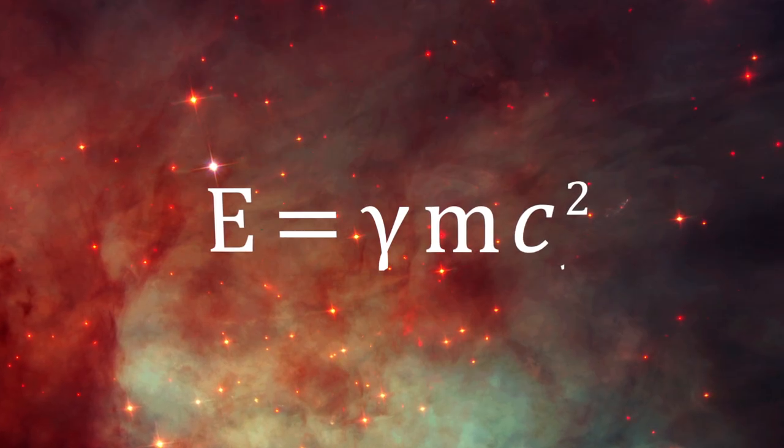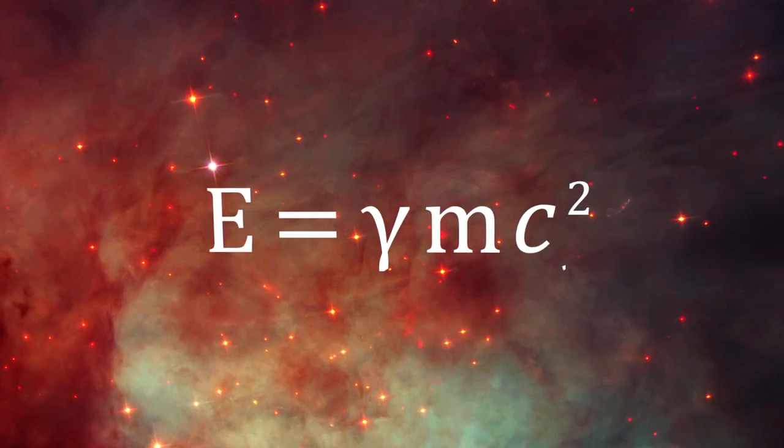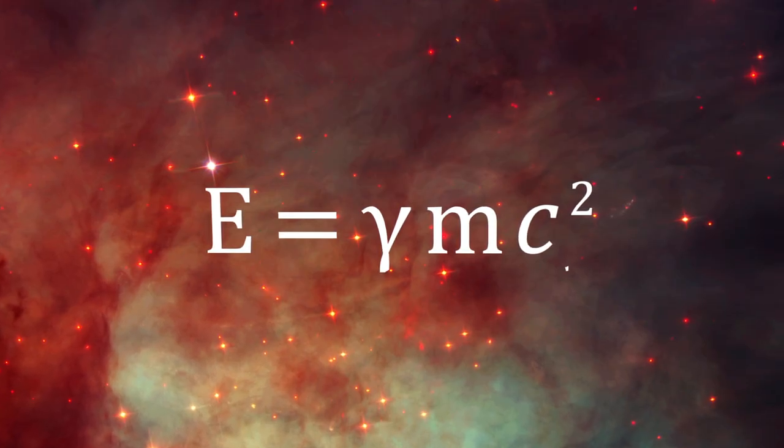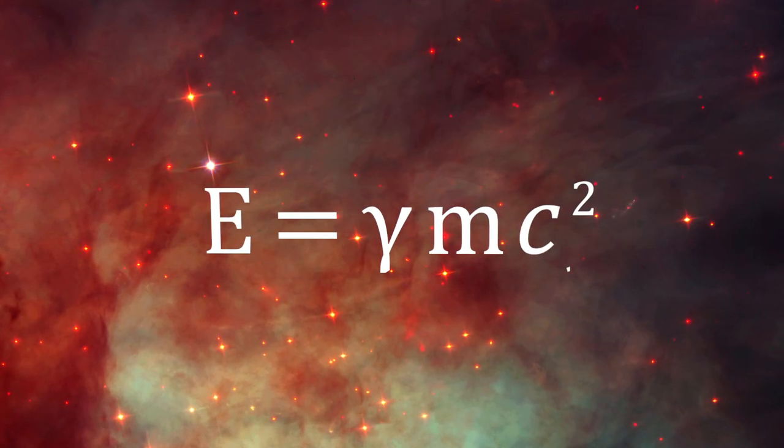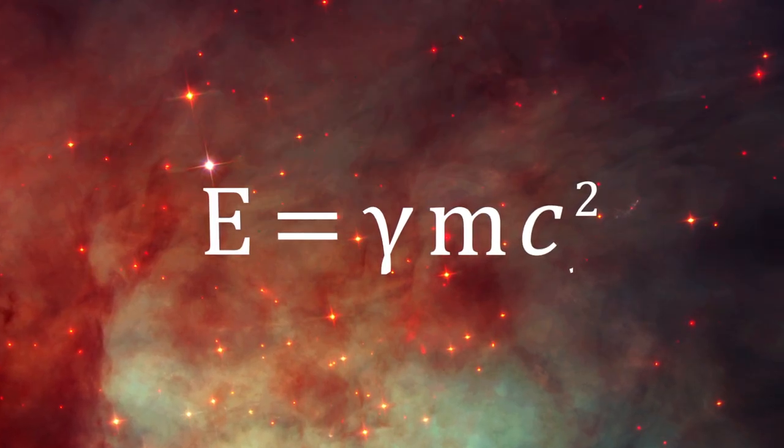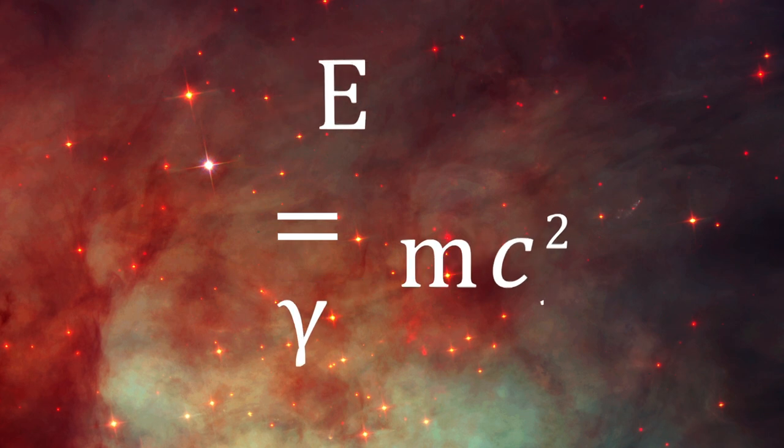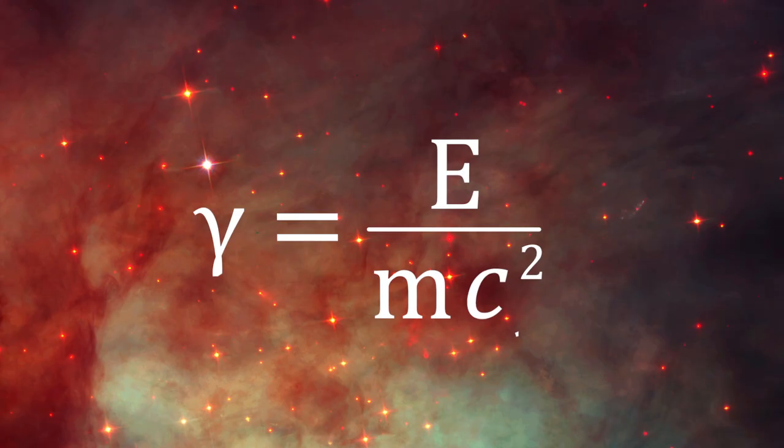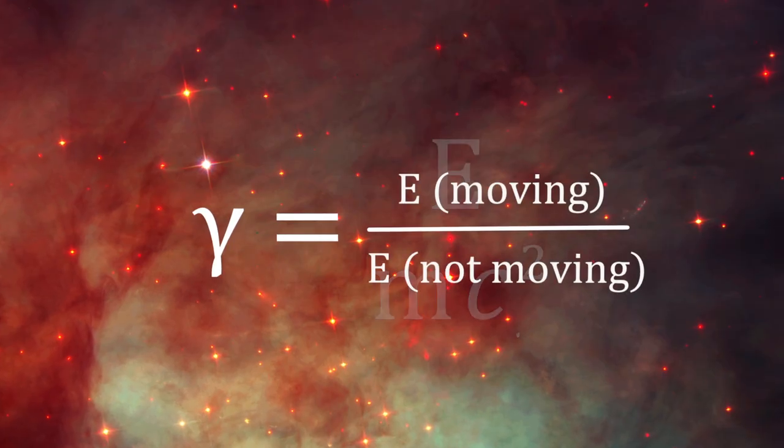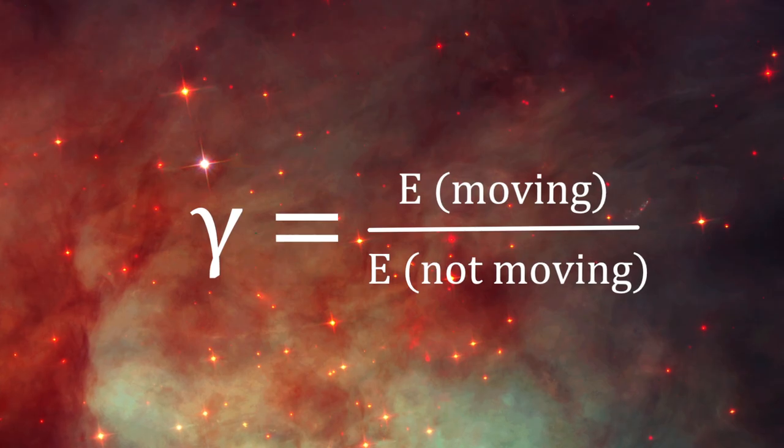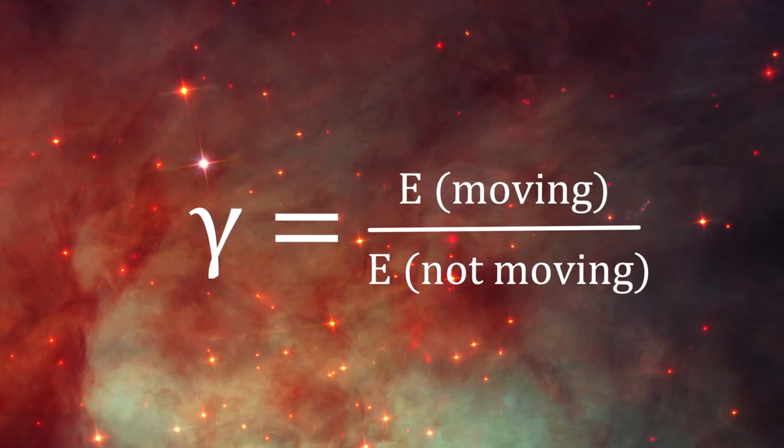Commenters in previous videos asked for a physical meaning for gamma, and this is at least the way that I think of it. Remember that MC squared is the energy of a particle at rest. In contrast, E is its energy while it's moving. Thus, gamma is simply the ratio of the total energy of a particle to its energy when it isn't moving. Since particle physics experiments often measure a particle's energy, I find this particular physical implication of gamma to be the most useful.